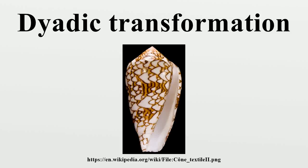The dyadic transformation is the mapping produced by the rule. Equivalently, the dyadic transformation can also be defined as the iterated function map of the piecewise linear function. The name bit shift map arises because, if the value of an iterate is written in binary notation, the next iterate is obtained by shifting the binary point 1 bit to the right, and if the bit to the left of the new binary point is 1, replacing it with a 0.